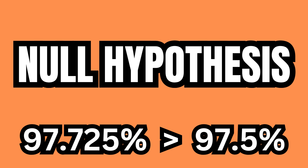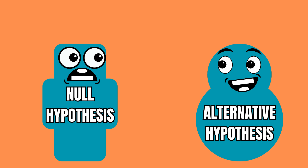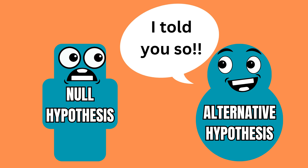Since 97.725 percent is slightly more than 97.5 percent, we can reject the null hypothesis. In other words, the true mean of the weight of this town is indeed 87 kilograms and not 85 kilograms. If you want to learn more about statistics, check out this playlist.